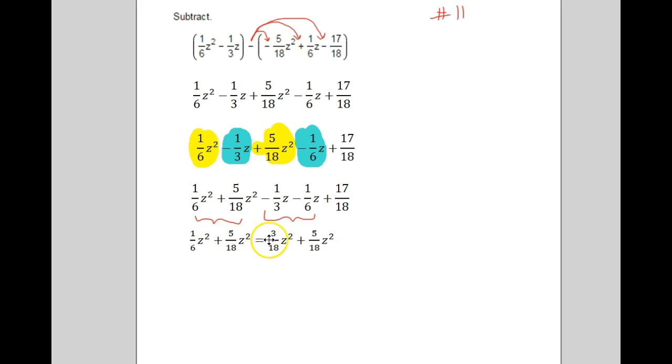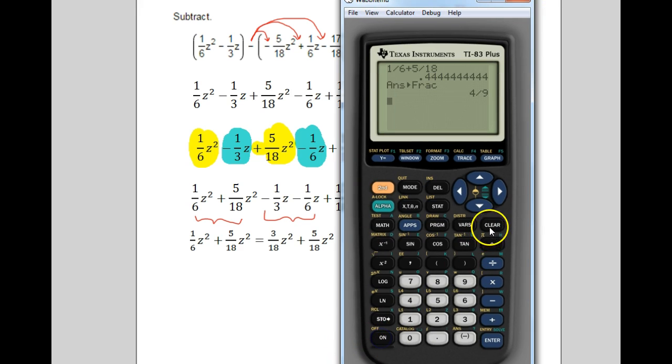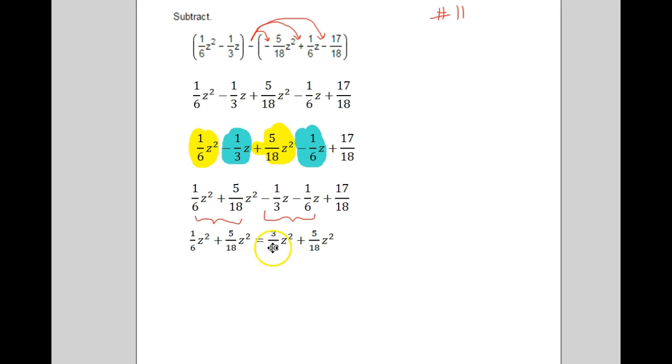Alright, so 1/6 and 3/18 are the same thing, you can check it on your calculator. 1 divided by 6 is that decimal, 3 divided by 18 is that exact same decimal. They're the same thing, it's just we got a common denominator so we could combine the two fractions. And then 3/18 and 5/18 will combine to 8/18. That has a common factor of 2, so we divide that out and we end up with a 4/9 z squared. We combine these two, so this piece right here we can rewrite then as 4/9 z squared.